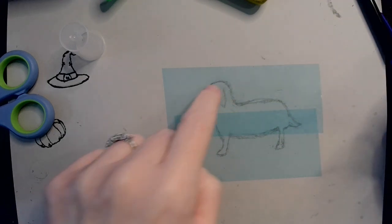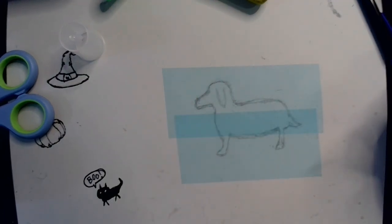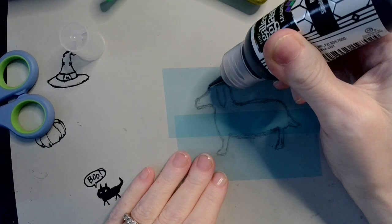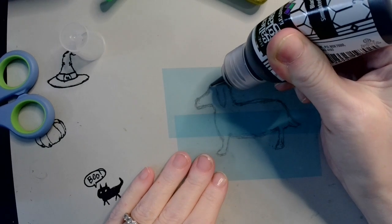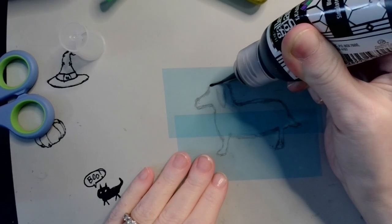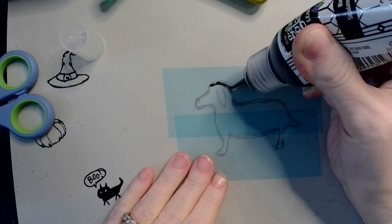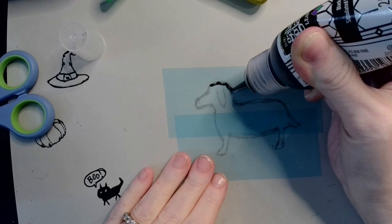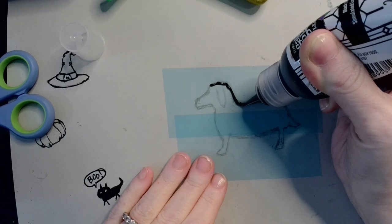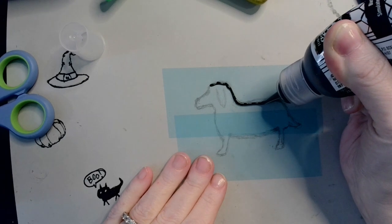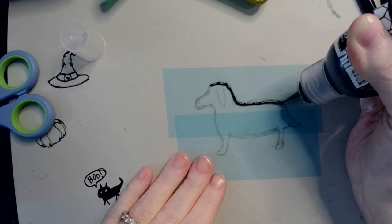So what I'm going to do is I'm just going to go around and make an outline of this. And I decided to use this stuff instead of my UV resin because it stays put better.